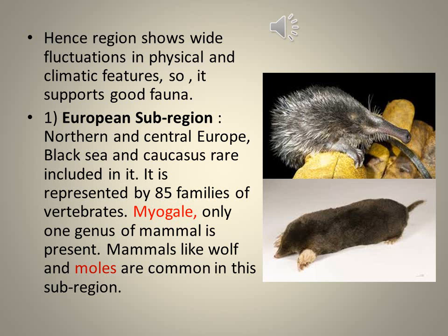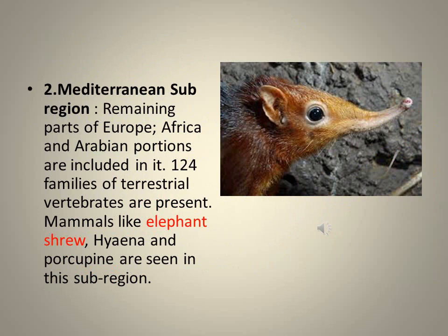As the Palearctic is the largest region, it shows fluctuations in physical and climatic features. For the study of fauna and flora, it is divided into subregions: the European subregion, covering Northern and Central Europe including the Black Sea and Caucasus, where Myogale is the only unique genus of mammal, along with wolves and moles. The Mediterranean subregion has 124 families of terrestrial vertebrates; mammals like elephants, shrews, hyenas, and porcupines are seen here.